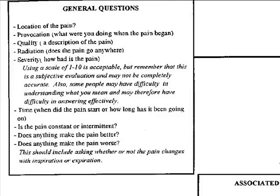Ask if the pain is constant or if it comes and goes. Does anything make the pain better — movement, positioning, breathing? Does anything make the pain worse — movement, breathing, activity? You should also try to include asking them whether or not the pain is changing, as well as when they take a deep breath or exhale. These are things you can ask to vector your exam and help with your differential diagnosis.